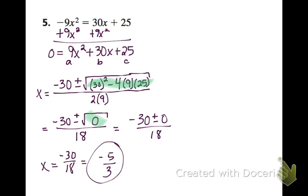If we were to think about graphing it, then our vertex would only touch the x axis once at negative 5 over 3. So about right there. And it's going to open up because I have a positive 9x.